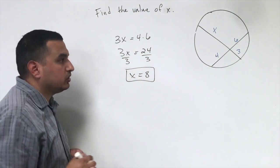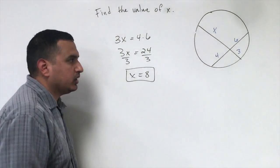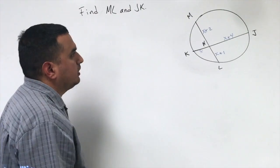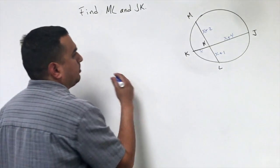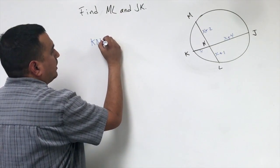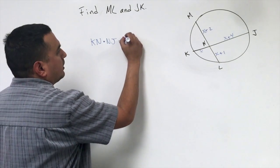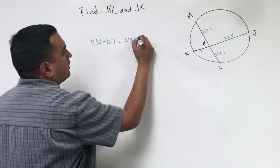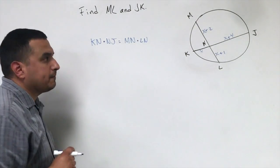Okay, so 3 times 8 is 24, 4 times 6 is 24. They're equal. So the segment chord's theorem says that in this example that KN times NJ would equal MN times LN. In other words,